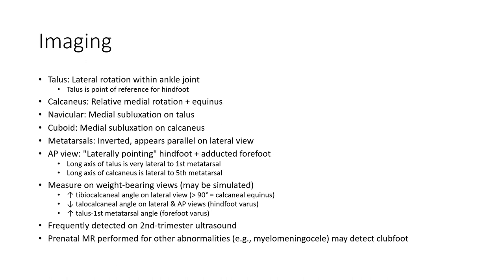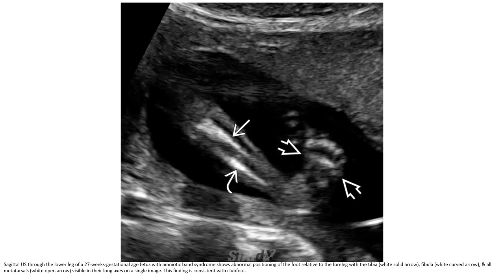Clubfoot is frequently detected on second trimester ultrasound. A related lateral or targeted scan is performed for other anomalies. This ultrasound through the lower leg of a 27-week gestational age fetus shows abnormal pointing of the foot relative to the lower leg, with the tibia, fibula, and all metatarsals visible in their long axis on a single image. The pointing is consistent with clubfoot.